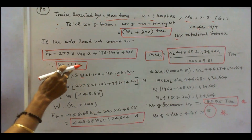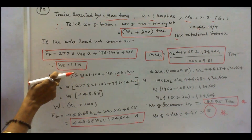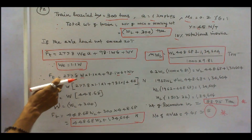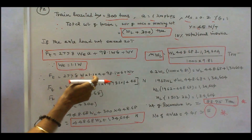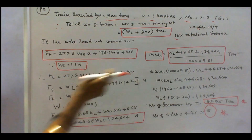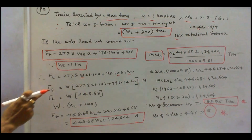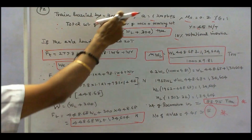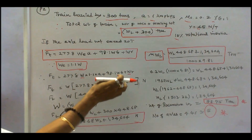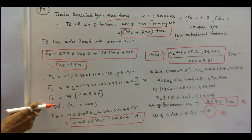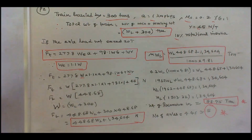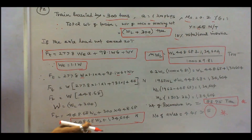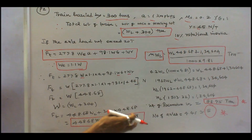Therefore accelerating weight equals 1.1 into dead weight. We know the formula for Ft, which can be rewritten as Ft equals 277.8 into W into 1.1 into A, plus 98.1 into W into G, plus W into R. Taking W common and substituting A equal to 1, G equal to 1, and R equal to 45: Ft equals W into 448.68. Substituting W equals WL plus 300: Ft equals 448.68 into WL plus 134,604 Newtons.